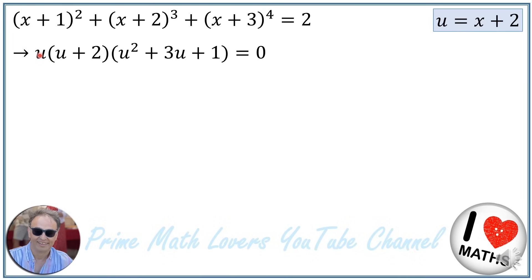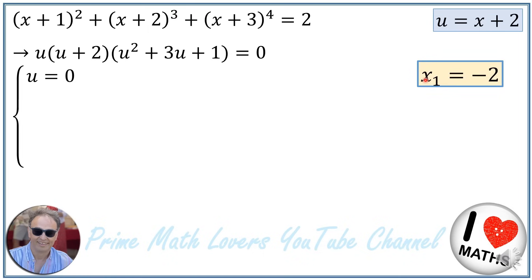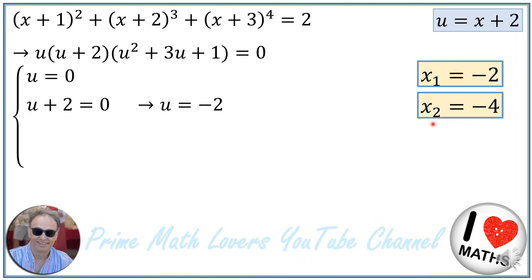When three factors multiplied together equal 0, we set each factor equal to 0. If u = 0, then since u = x+2, x = −2. This is the first root: x₁ = −2. For the second factor u+2 = 0, so u = −2, giving x = −4. Thus x₂ = −4.